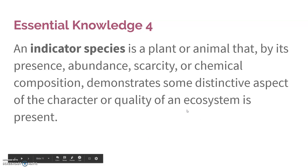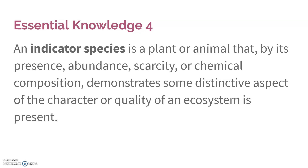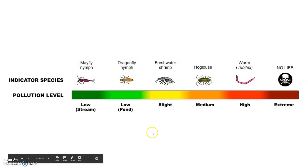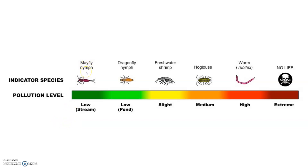An indicator species is something that, based on whether it's present, how much of it is there, or if it's absent when it should be there, tells us something about that environment. It tells us if something has been disturbed and allows us to see indications of the health of that ecosystem without having to know every little chemical quality about it. For instance, with stream pollution, if there is not a lot of pollution in a stream, you'll find more things like mayflies or dragonflies. If there's a little bit of pollution, you tend to get more shrimp.